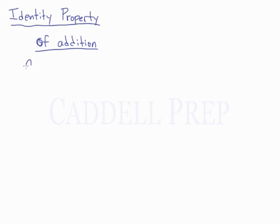The property states that a plus 0 equals a. And I just read a line through it so that I know it's not the letter o.